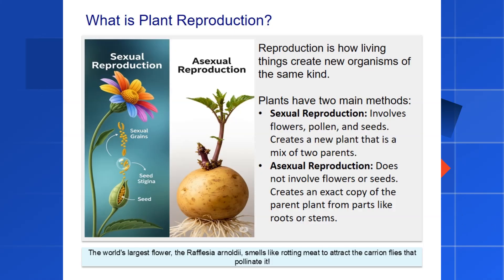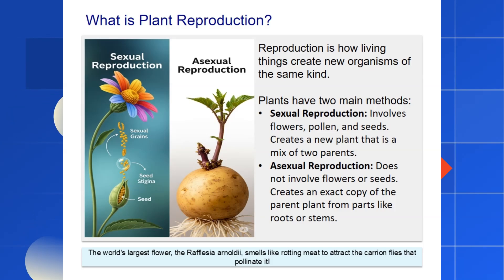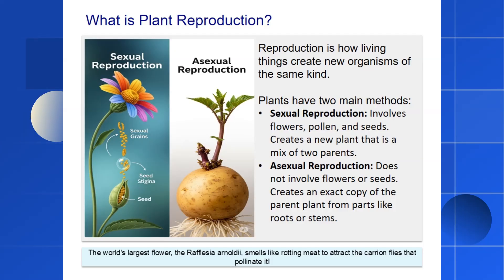We will explore both of these amazing processes in detail. Here's a fun fact: the world's largest single flower, the Rafflesia arnoldi, can grow up to three feet across, but you wouldn't want it in a bouquet. To attract the flies it needs for pollination, it gives off a powerful smell of decaying flesh.